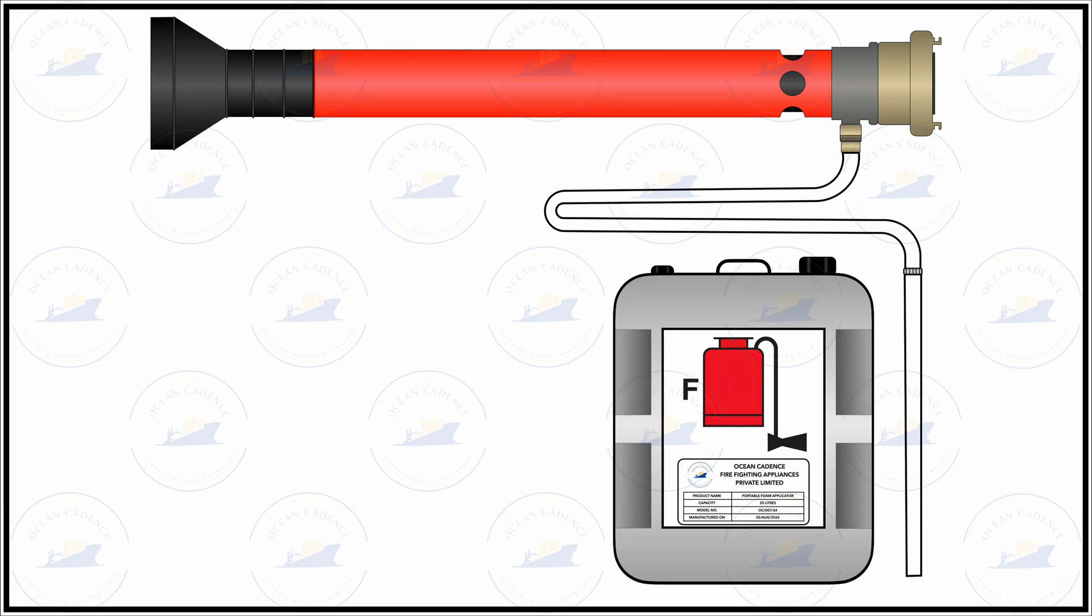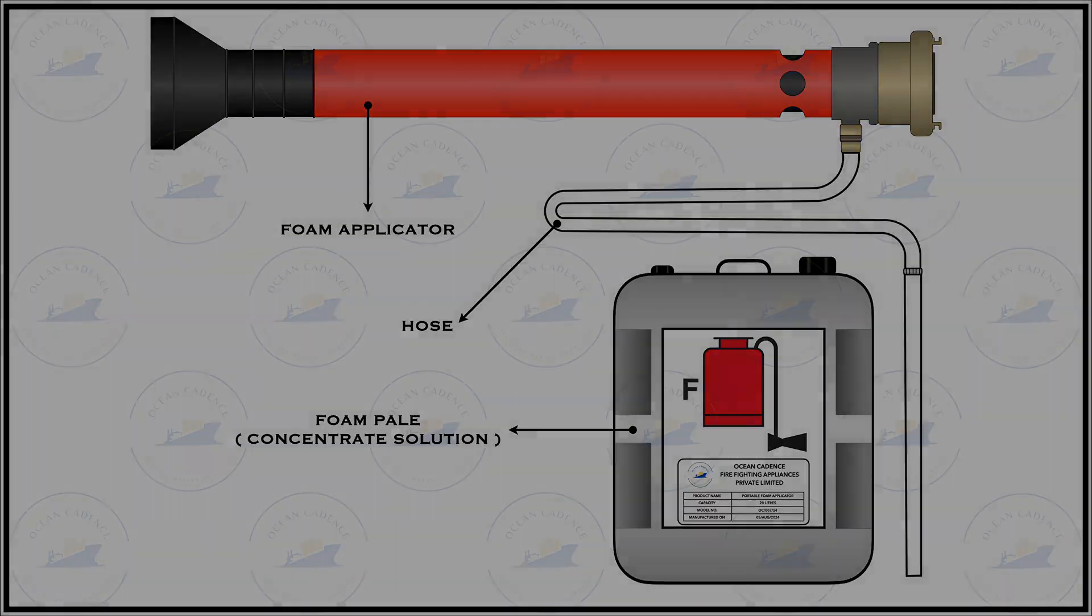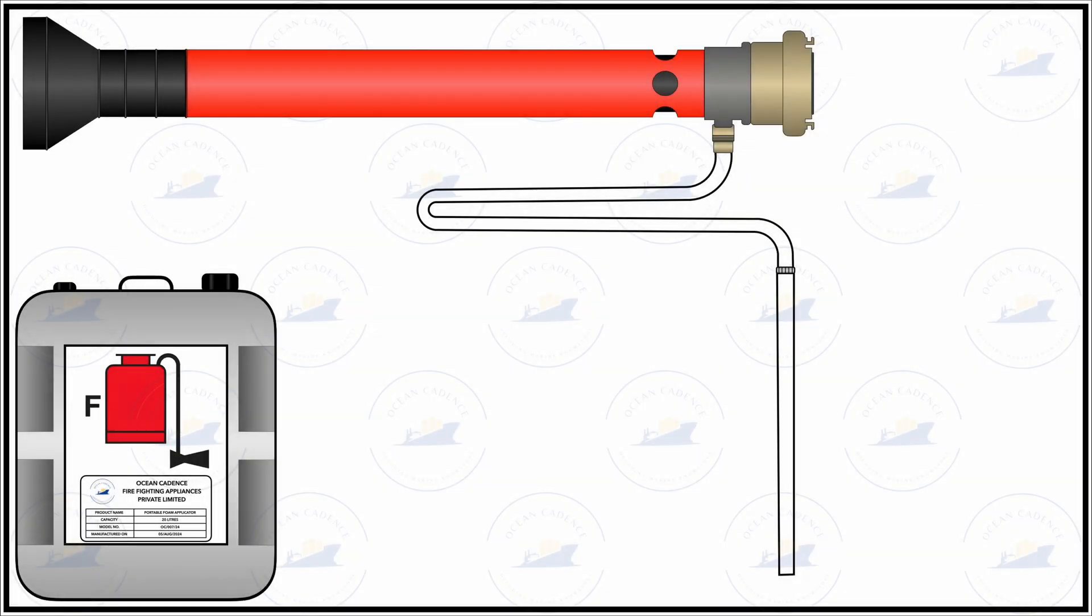This box would have a very nicely covered lid secured with a latch mechanism and inside the box would be the foam applicator, the hose as well as the portable foam applicator container unit. Now let us understand how this works.